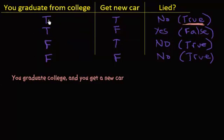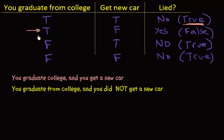So this represents the first scenario. So how would I represent the second scenario, this one? Okay, in the second scenario, you graduate from college, right, because that's what we did right here. And you did not get a new car, which is right here. You get a new car, which was false. And so that would mean you did not get a new car.